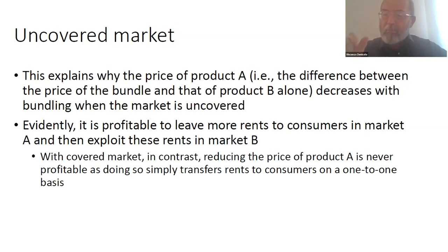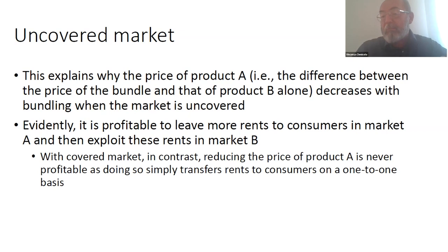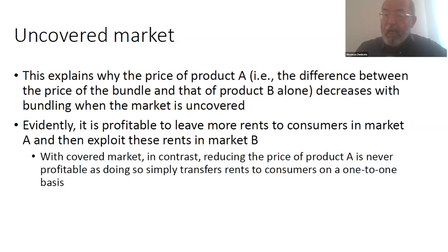If I understand correctly, this is what is actually happening in your model in the case of mixed bundling. When you notice there are two conditions — one where the market is covered and one where it is not covered with independent products — in the uncovered case the equilibrium features mixed bundling. What is more interesting to me in this case is that the price of product A actually goes down. If you define the price of product A as the difference between the price of the bundle and the price of product B, that goes down compared to independent pricing.